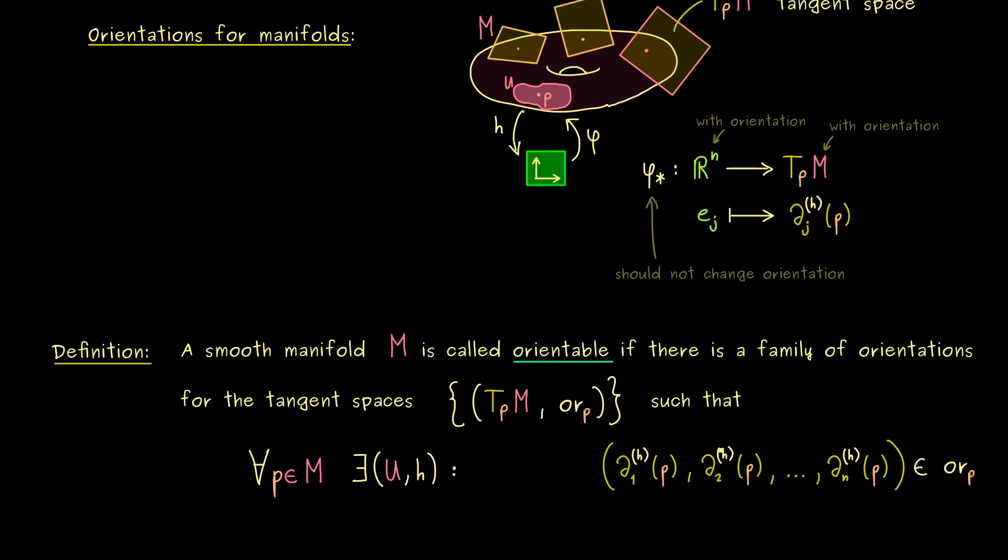This means this coordinate basis here should lie in our OrP. And there you see, this is exactly what we mean. The orientation should not change. If we call the standard basis positively orientated, we also want to call this one positively orientated.